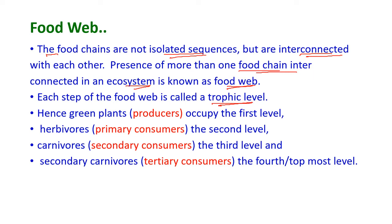Green plants occupy the first trophic level, herbivores occupy the second level, carnivores occupy the third level, and secondary carnivores occupy the fourth or topmost level. Green plants are known as producers, herbivores are known as primary consumers, carnivores are called secondary consumers, and secondary carnivores are called tertiary consumers.